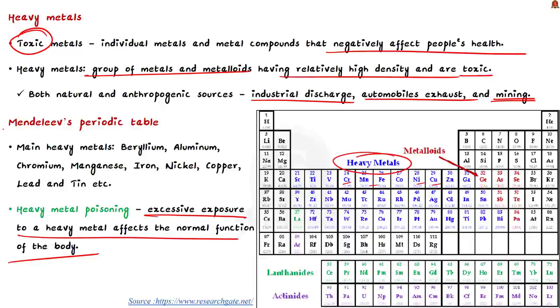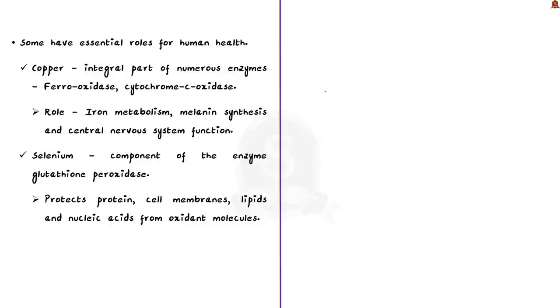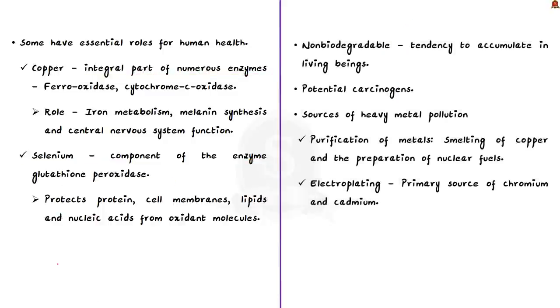Heavy metals are not dangerous per se. Some heavy metals even have essential roles for human health while some are carcinogenic or toxic. Carcinogenic means they can cause cancers. For example, if you take copper, it is an integral part of numerous enzymes including ferro oxidase, cytochrome c oxidase and others. It plays a role in iron metabolism, melanin synthesis and central nervous system functioning. If you take selenium, it is a component of enzyme glutathione peroxidase and this protects protein, cell membranes, lipids and nucleic acids from oxidant molecules. If you take chromium, it potentiates, that is increases the power of insulin in patients who have impaired glucose tolerance.